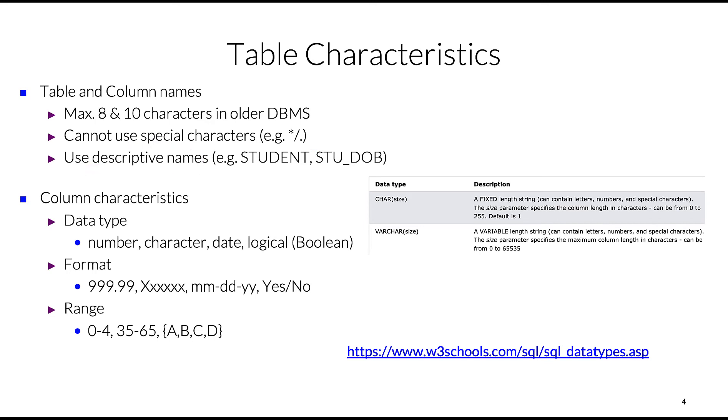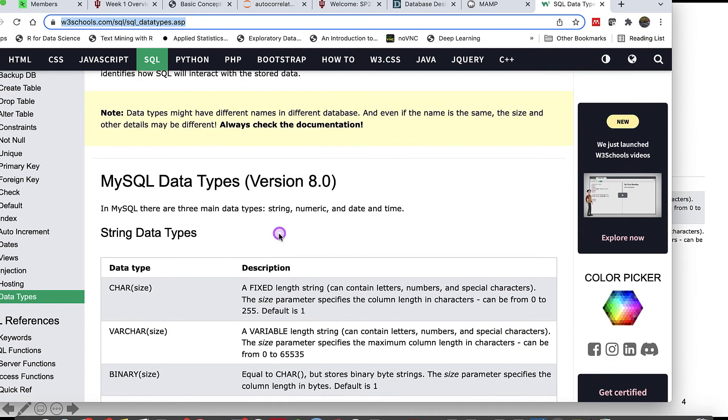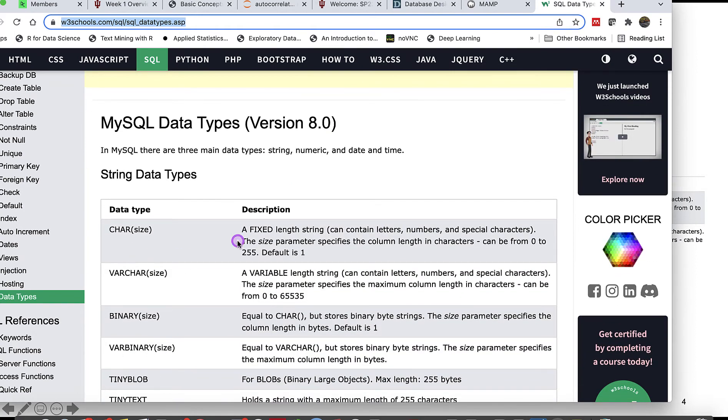Each attribute or column will have a specific data type. Let's look at various data types in MySQL. For example, we have three main data types: strings, numeric, and date and time. CHAR is a fixed-length string of letters, numbers, or special characters, and the size parameter is defined by us, ranging from zero to 255. VARCHAR with specific size is a variable-length size, and in this case you notice the difference in the length.